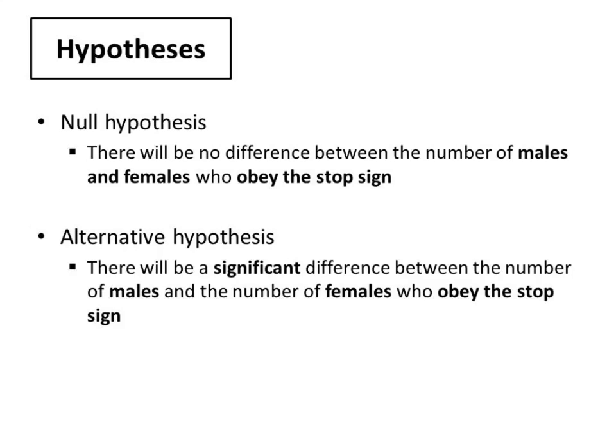The null hypothesis for this investigation states there will be no difference or no association between gender and compliance with road rules. And the alternative hypothesis states that there will be a difference. The investigators might choose a non-directional hypothesis if previous research does not point them in a particular direction.